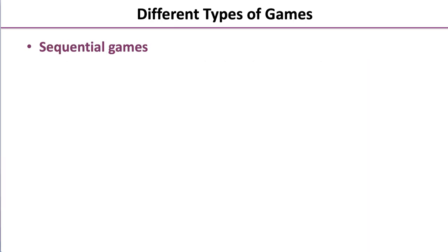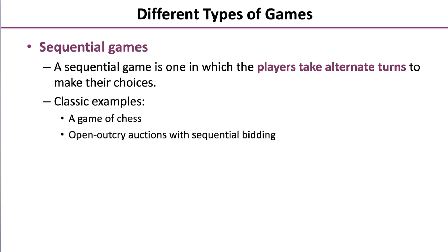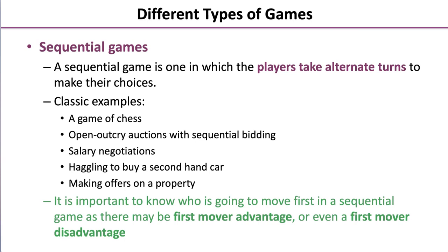We also have what's called a sequential game, in which players take alternative turns to make their choices. Some classic examples are: a game of chess, open outcry auctions with sequential bidding, salary negotiations, haggling to buy a second-hand car, and making offers on a property. It's important to know who is going to move first in a sequential game, as there may be first mover advantage or even a first mover disadvantage. We can apply this same logic when discussing business strategy decisions as well.